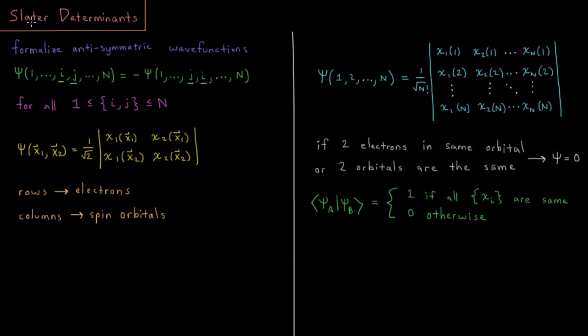That's the intro to Slater determinants, which is going to be our default wave function for Hartree-Fock theory moving forward, and is also going to be the basis for all the corrections on top of Hartree-Fock theory as we move forward in chapters that go beyond that.